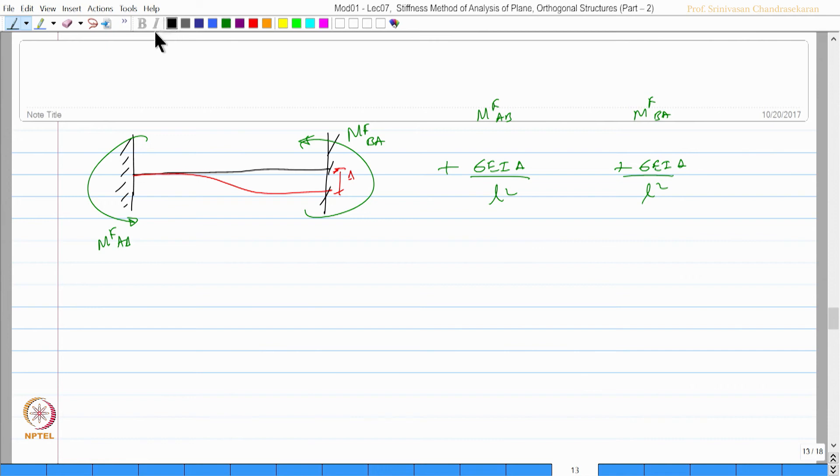If I have a fixed beam on one end and roller on the other and the beam settles by delta, there will be a moment of this order. This will be M_BA and this will be M_AB. M_AB will be plus 3EI·δ/L² and this will be 0.